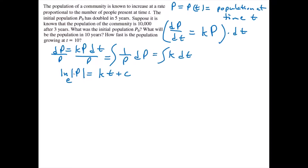The absolute value of p is the same as p because p will not be zero or negative. So we'll simply write this as p equals e to the kt plus c. Our function p of t will be the same as e to the c times e to the kt.